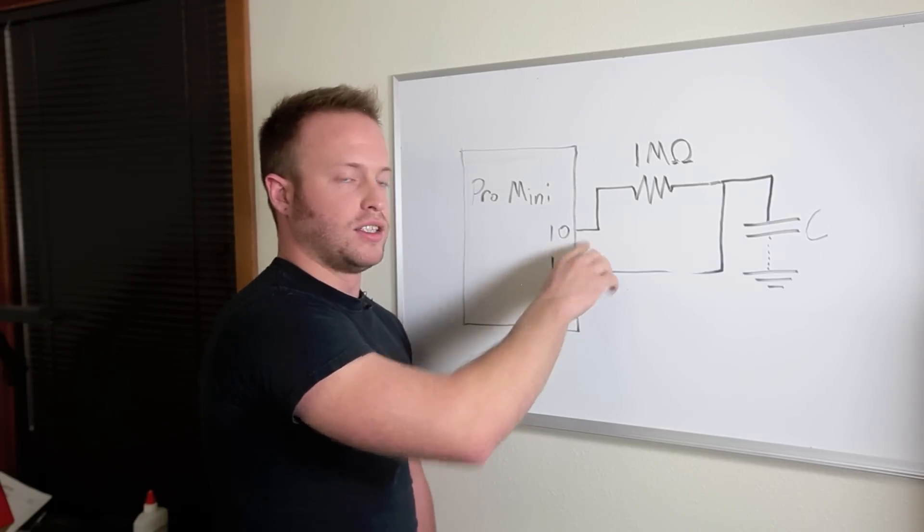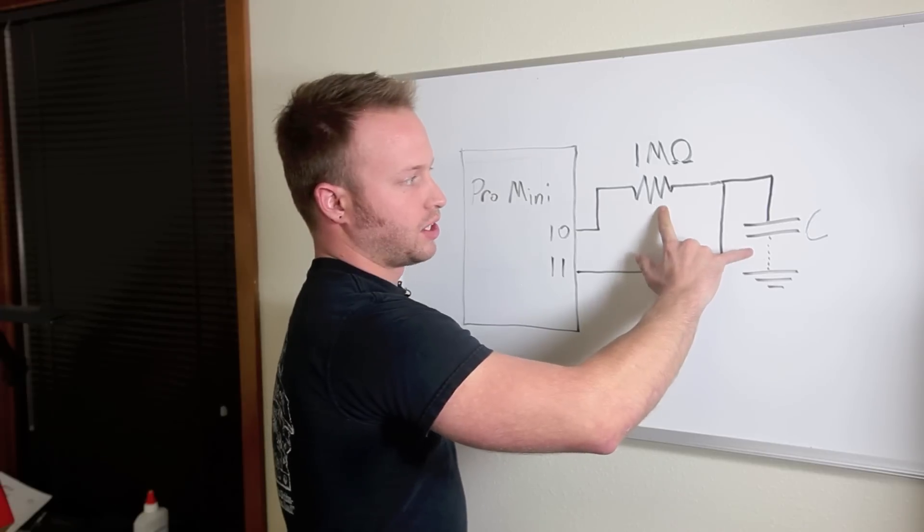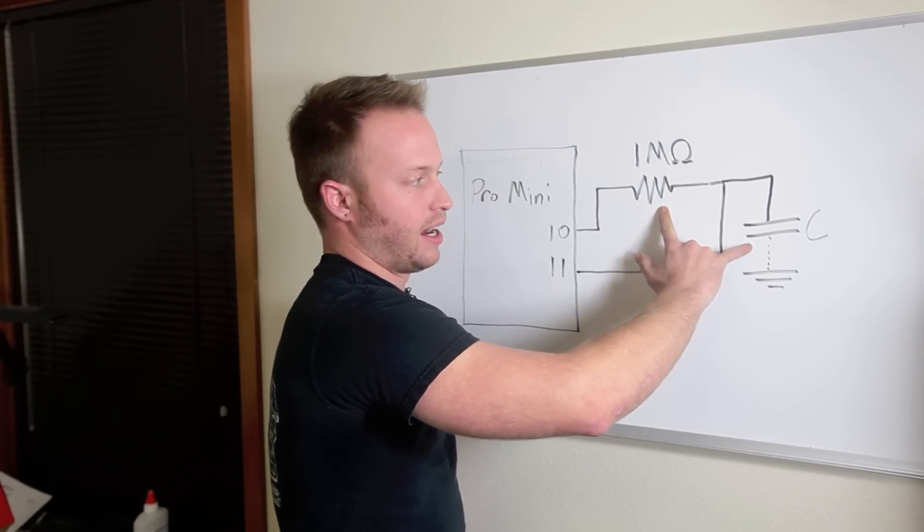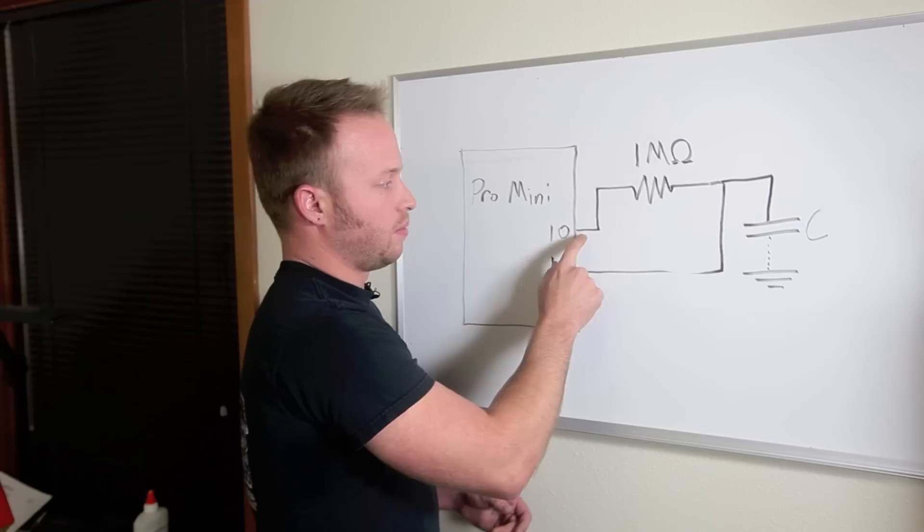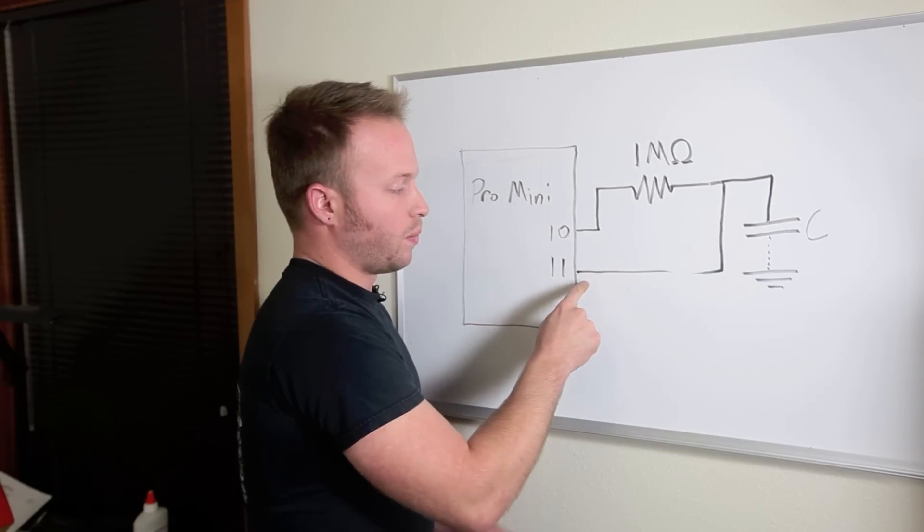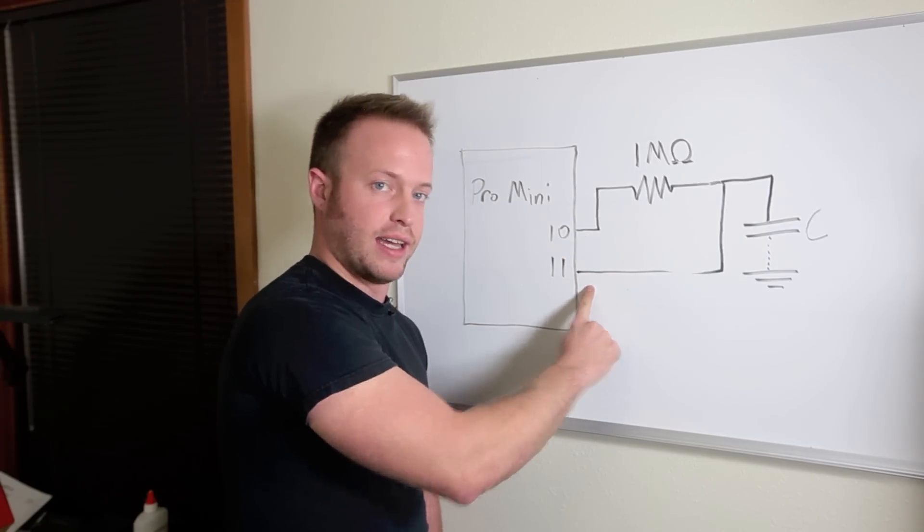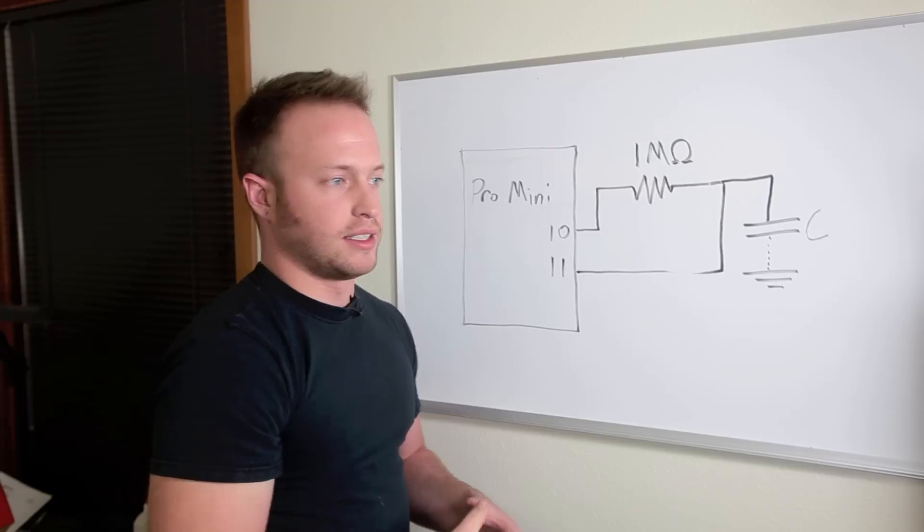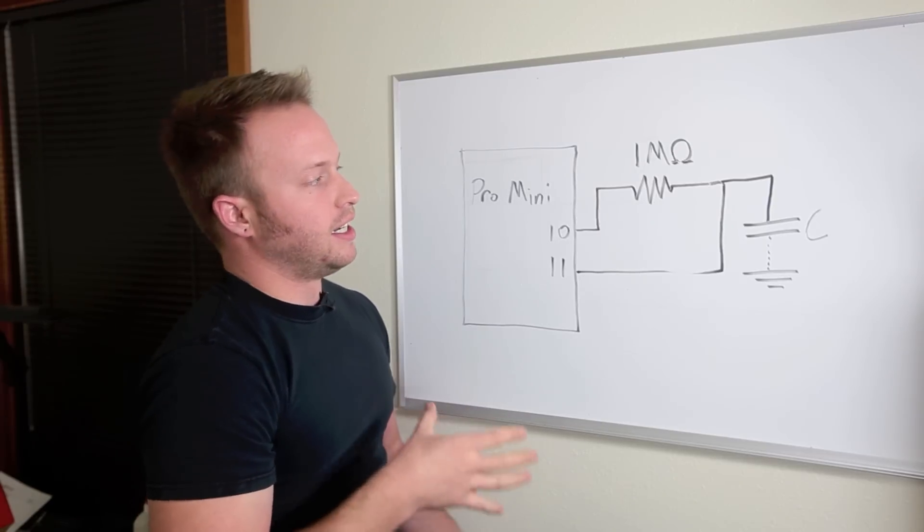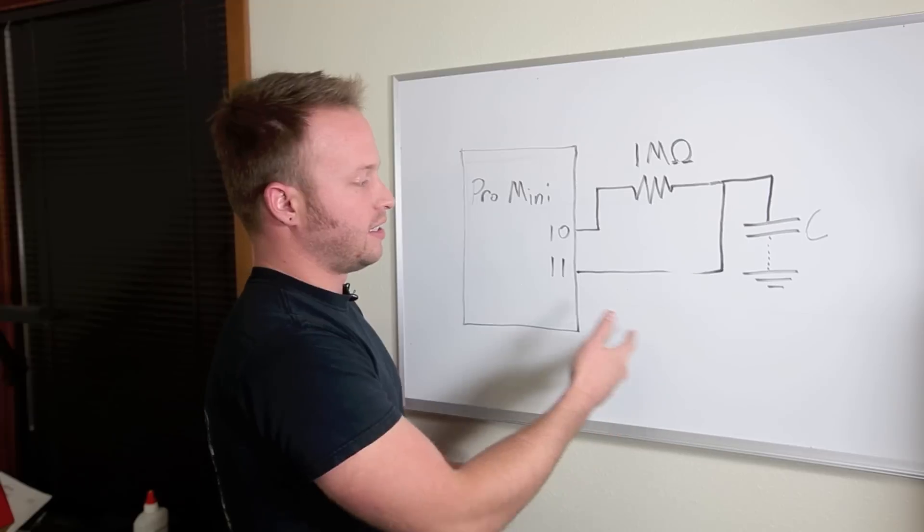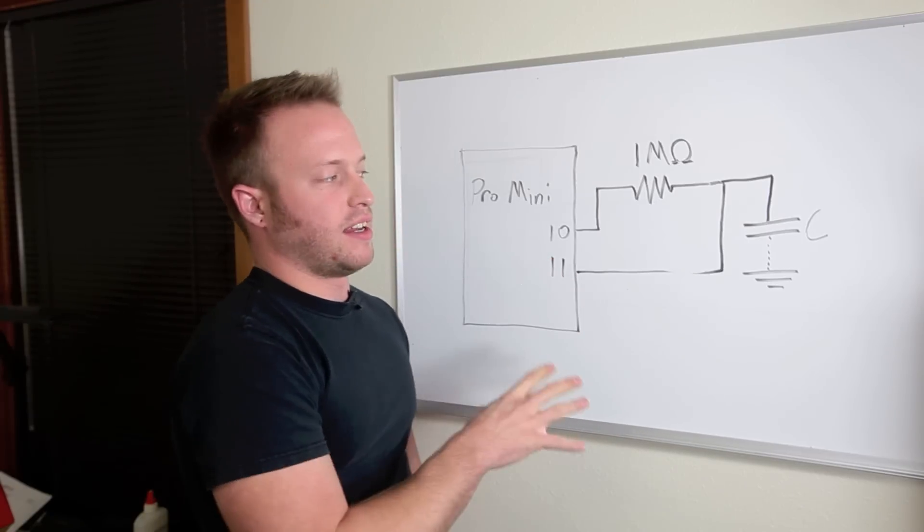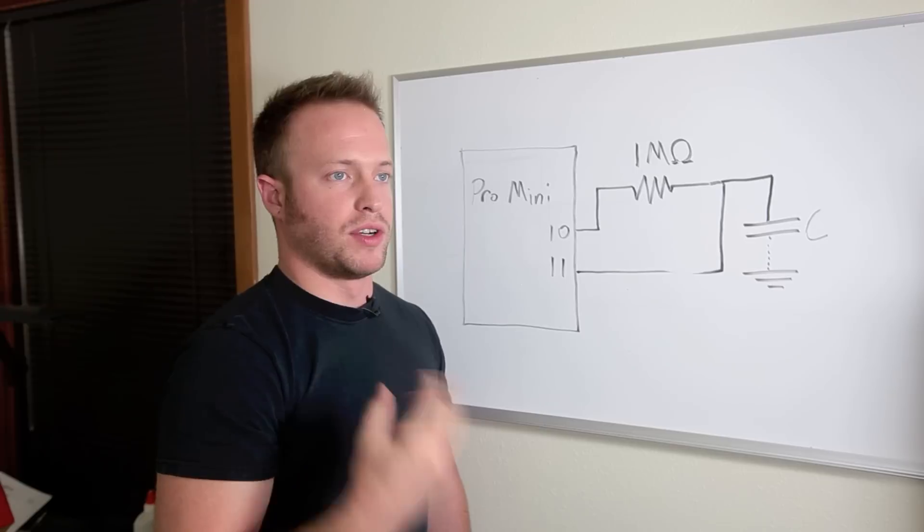The only way to really do that is measure the time in between when this line goes high and then this line goes high afterwards. You send pin 10 high to 5 volts. This resistor capacitor pair here creates a delay in between when pin 10 goes high and then when pin 11 reads high. What the library does or what the function does is sends 10 high and then waits and counts. It waits until it sees 11 goes high. It takes that number and returns a time value.